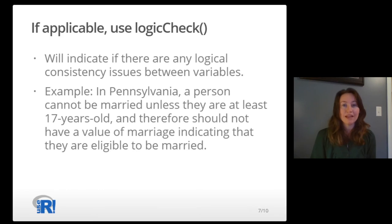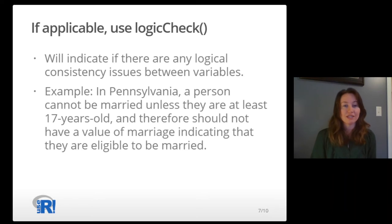If applicable, use the LOGICCHECK function. This will indicate if there are any logical consistency issues between variables. For example, in Pennsylvania, a person cannot be married unless they are at least 17 years old, and therefore should not have a value of marriage indicating that they are eligible to be married.